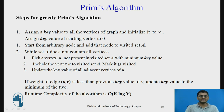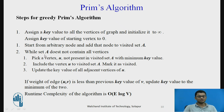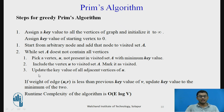This is Prim's algorithm to find the minimum spanning tree. First, assign a key value of infinity to all vertices and assign a key value of 0 to the starting vertex. Start from any arbitrary source node. While maintaining a visited set A, pick a vertex U not present in set A with the minimum key value, add it to the visited set, and update the key values of the adjacent vertices of U. If the weight of edge UV is less than the previous key value of V, update the key value to the minimum of the two.